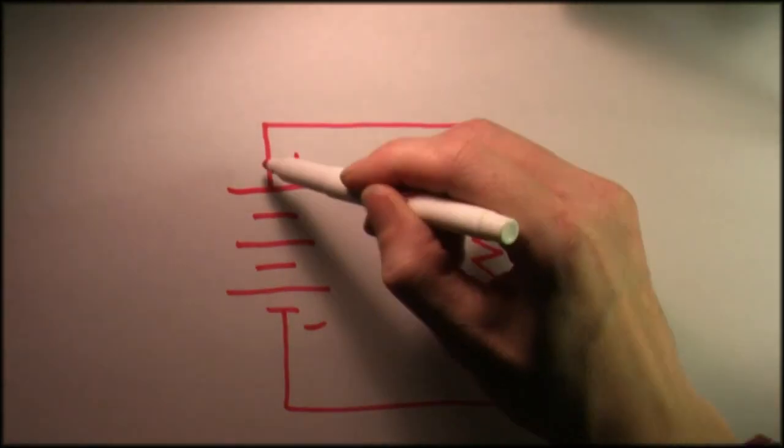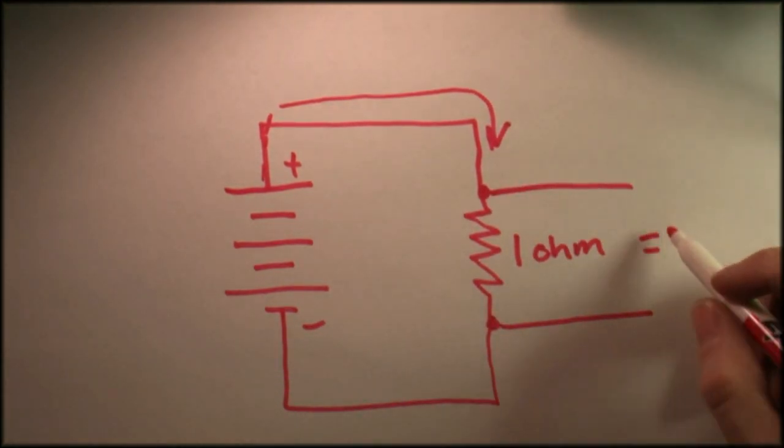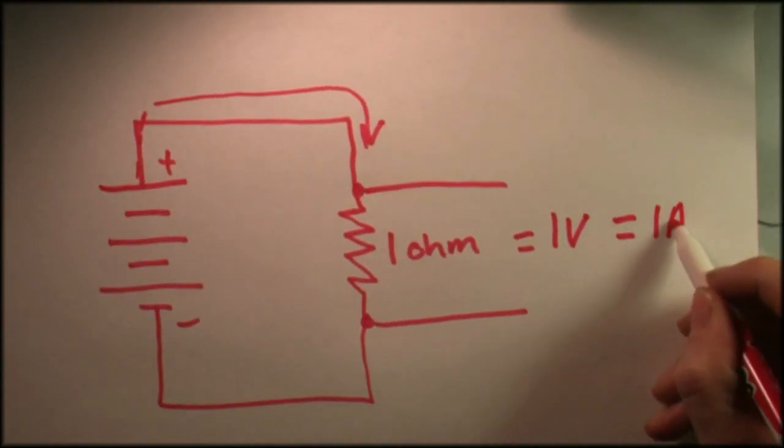Say we want to measure some current. We can put a resistor in series with our circuit and measure the voltage drop across the resistor and use Ohm's Law to determine the current flowing through our circuit.